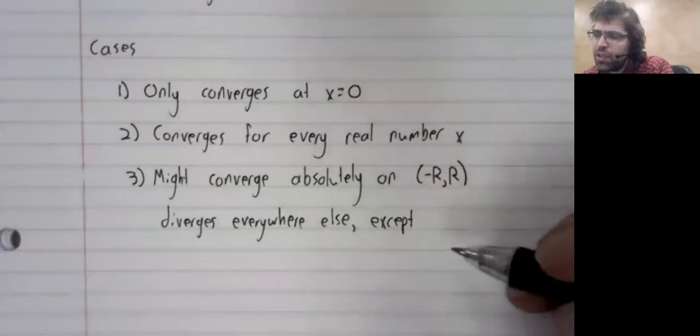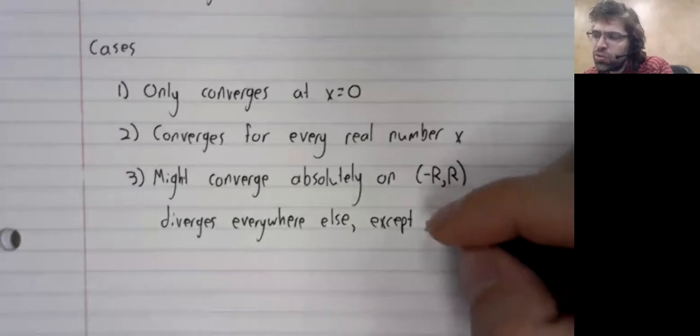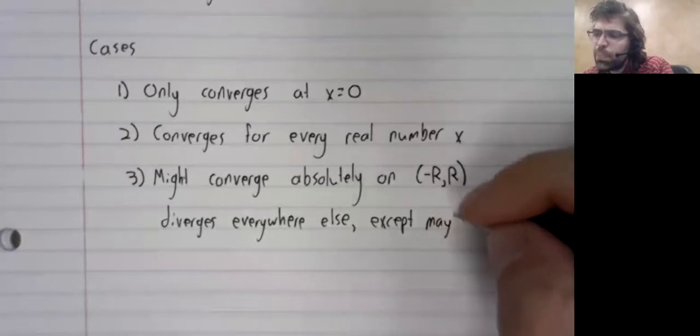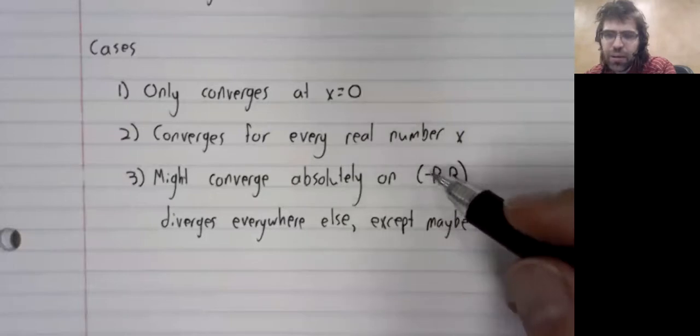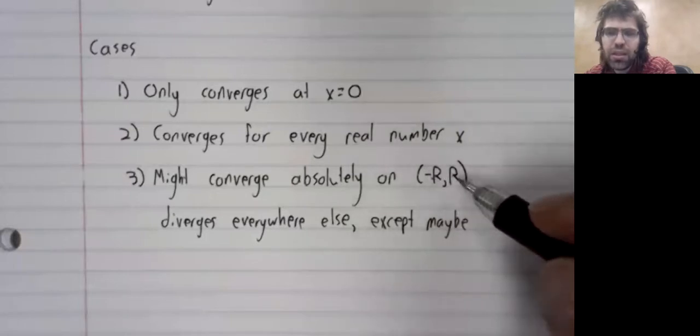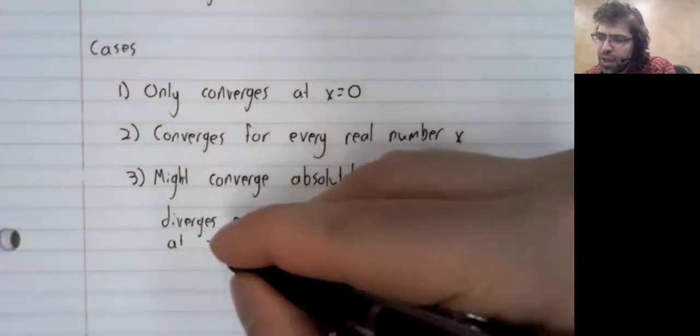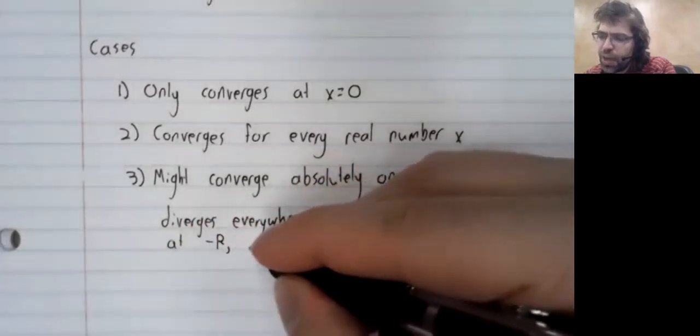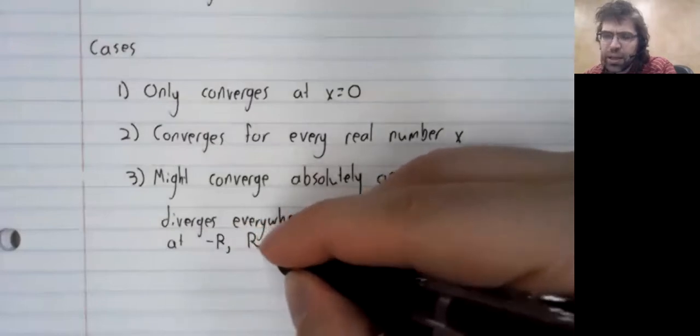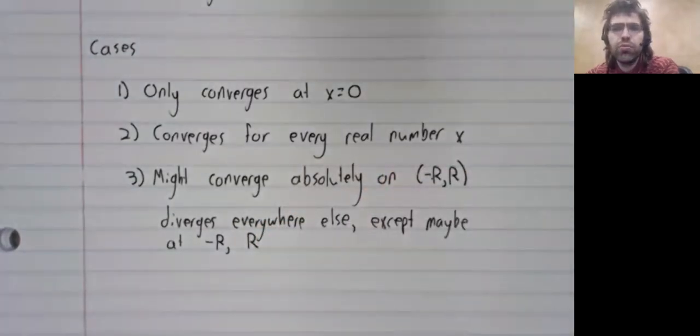It diverges everywhere else, except maybe at these endpoints. At the endpoints, it might be doing anything: converging absolutely, converging conditionally, or diverging. And it might do different things at different endpoints.